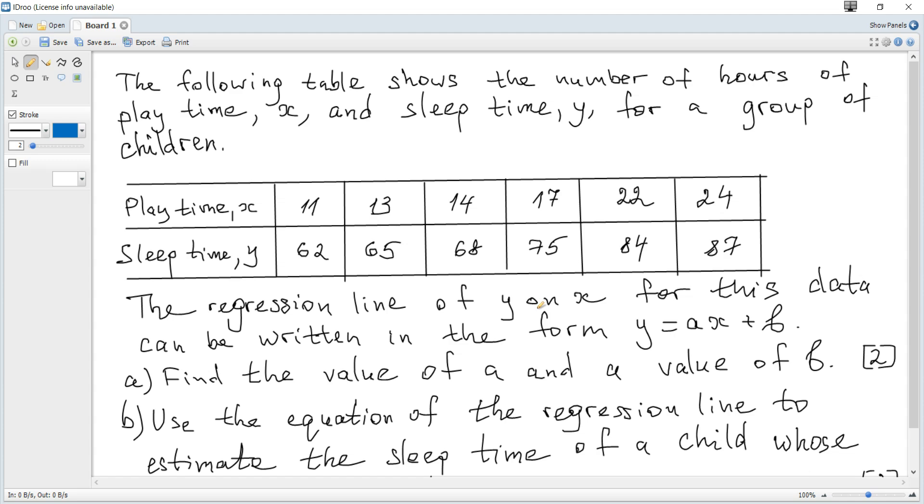The following table shows the number of hours for playtime x and sleep time y for a group of children. The regression line of y on x for this data can be written in the form y is ax plus b. Question a finds the value of a and the value of b.